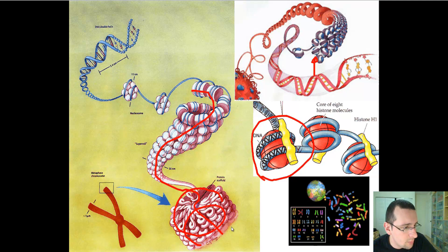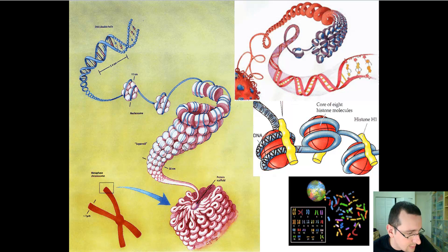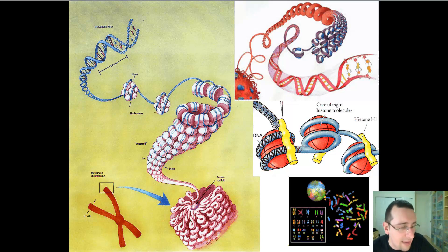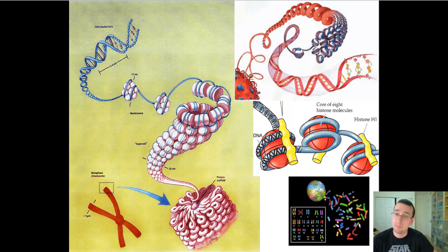This coil will then coil even more to become a supercoil, and then the supercoil will coil even more to become the actual chromosome. And it's interesting how you can see that the way it actually looks is a large jumble of fibers, which include protein and DNA, but mostly protein.